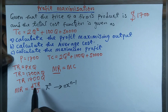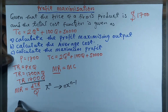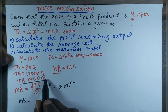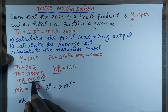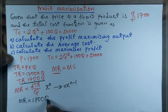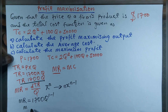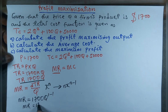We are going to find the derivative of total revenue with respect to quantity. Since the power of Q is 1, applying the power rule gives us marginal revenue equal to 1,700.